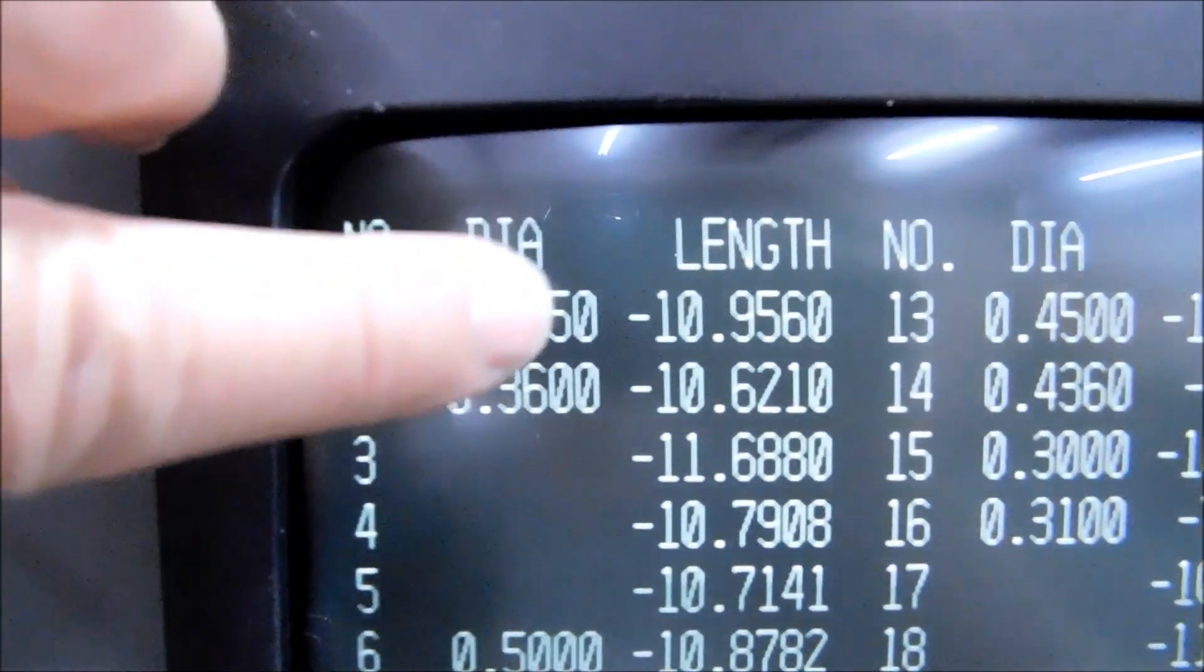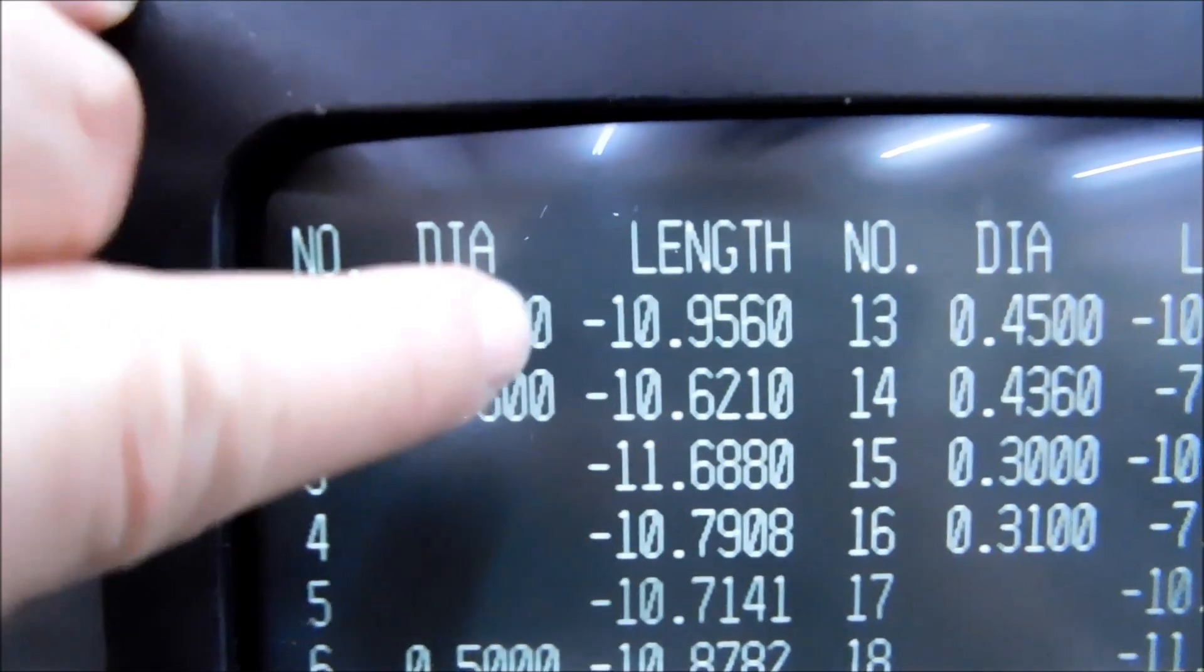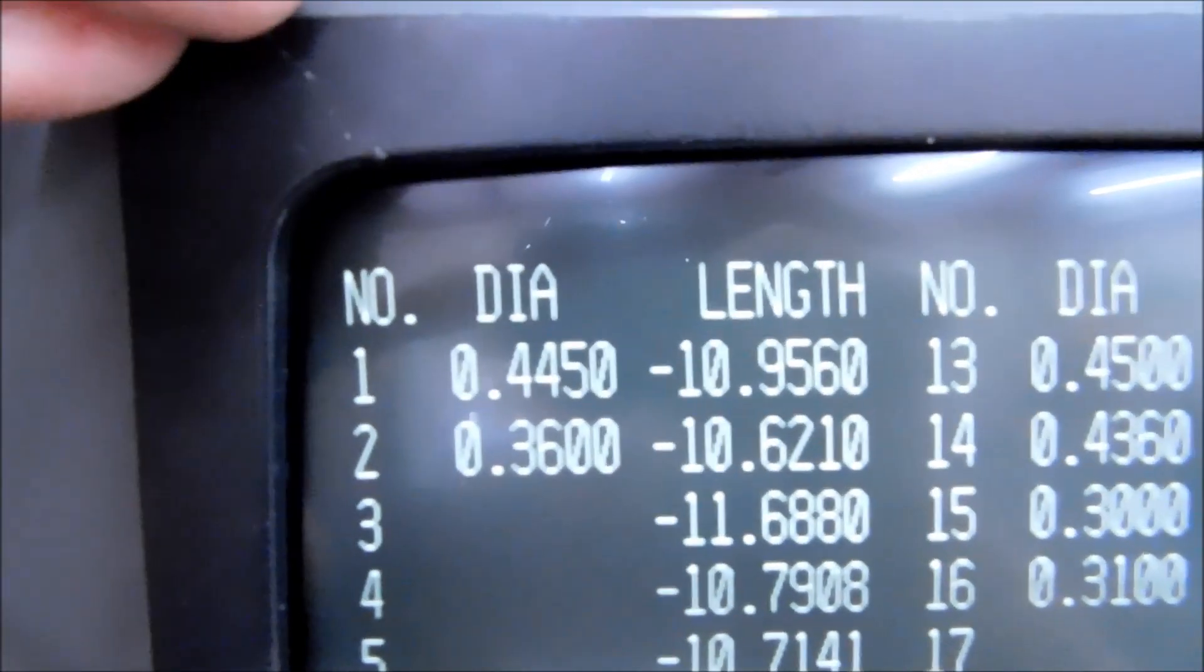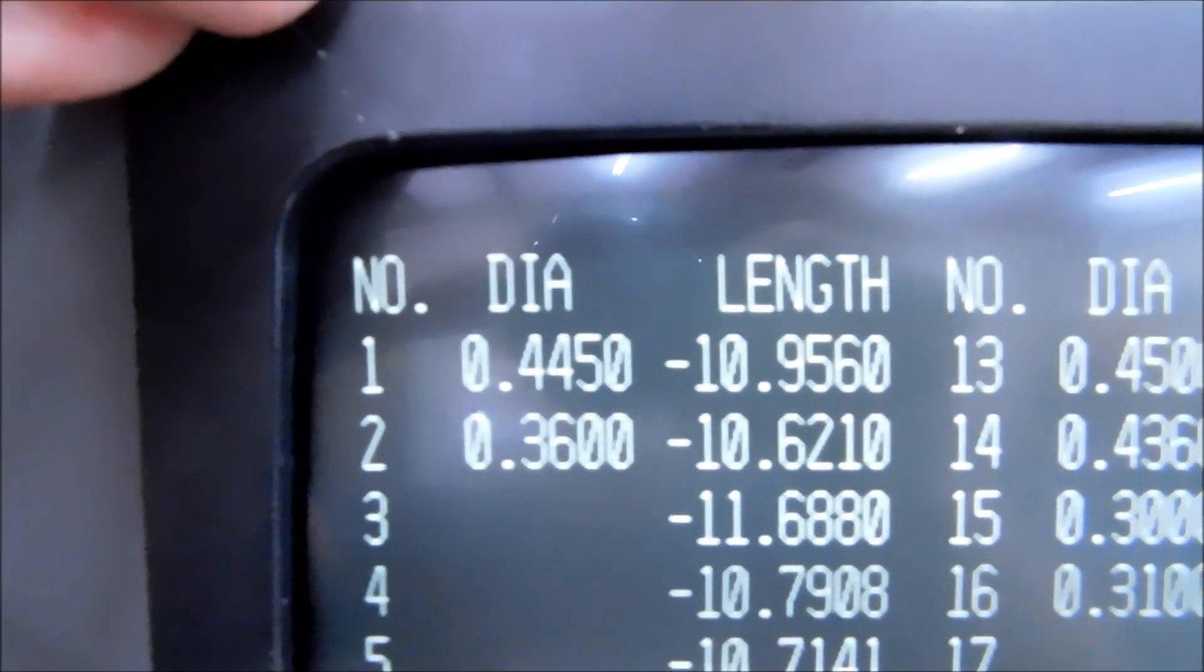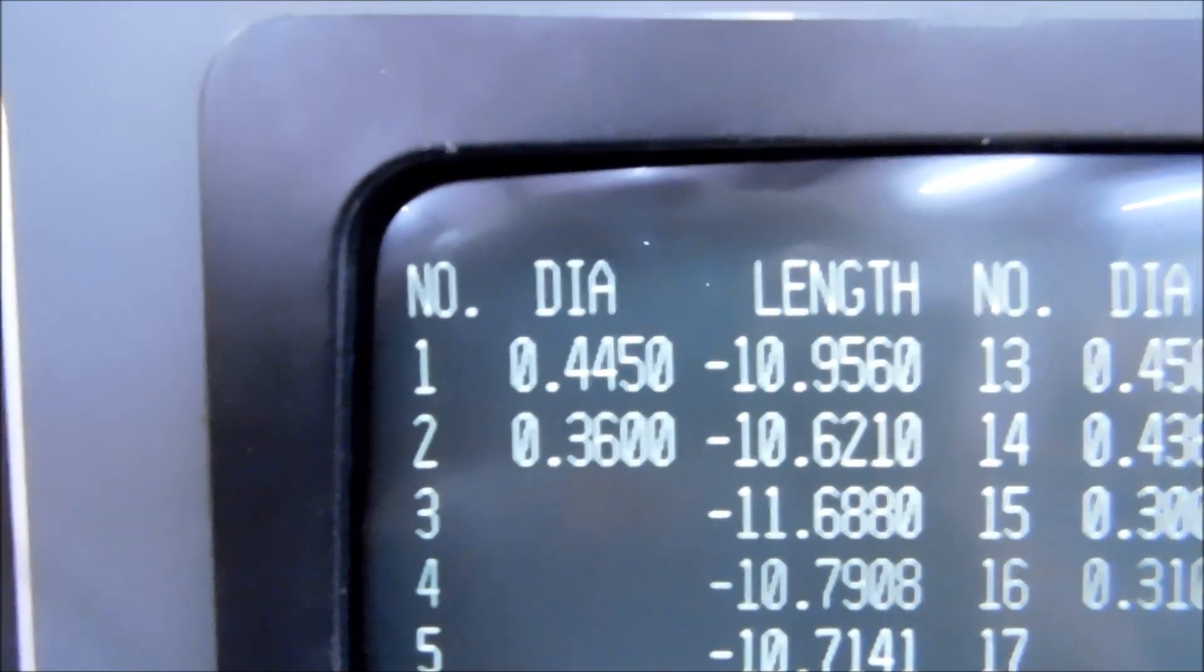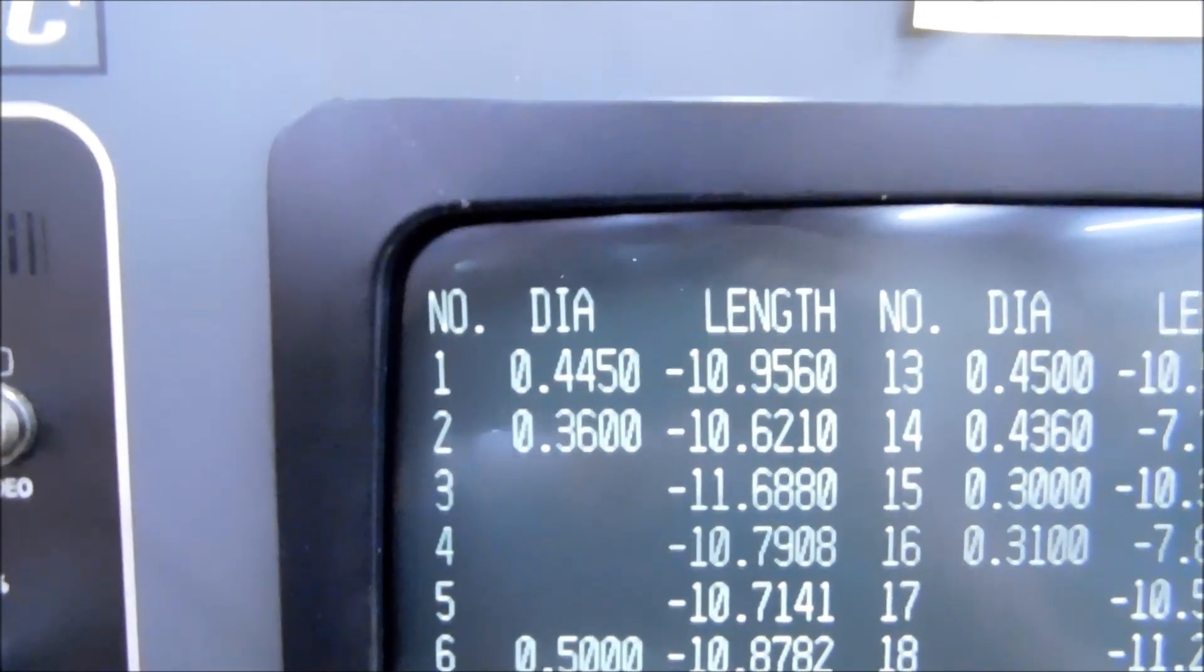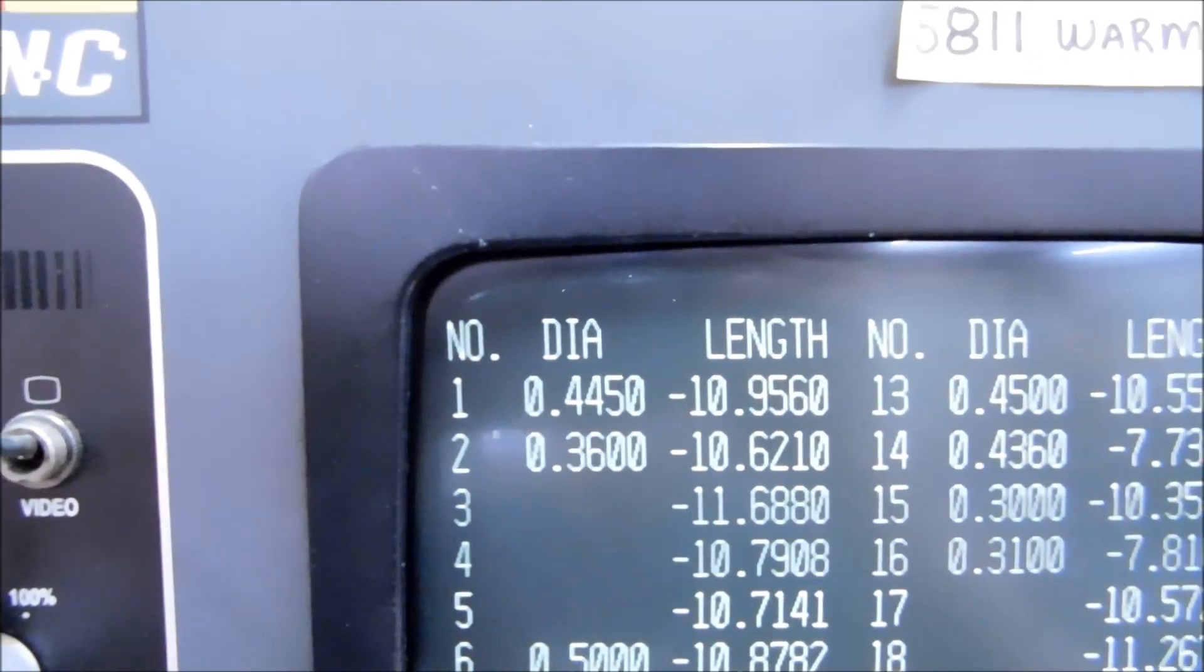When I do a part like this, I lie to it on the first go-round. After I blast it, I will change this back to the .437 or .436 that the tool actually cuts, and I will run the program again. And it's like having two programs in one. All you need to do is change that diameter in the offset and you are done. So let's blast these pieces, I'll show you what they look like when they come out.